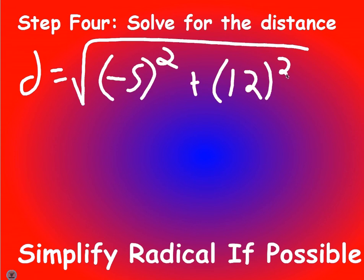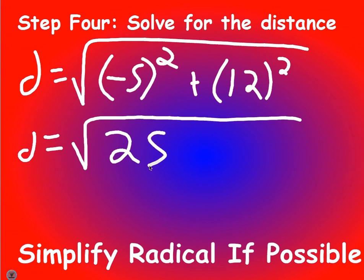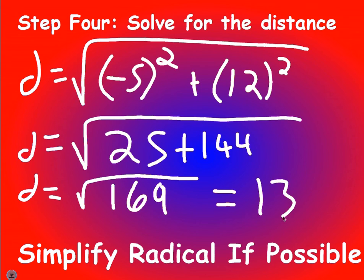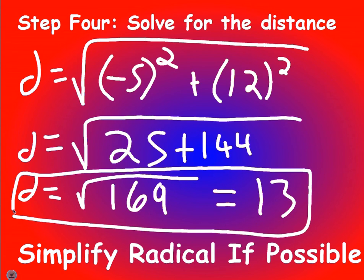Negative 5 squared is 25 — remember, negative times negative is positive. And 12 squared is 144. So we have the square root of 169. The square root of 169 is 13. In this case, the distance between the two points is a whole number. It'll happen a few times on the worksheet, but most of the time it will come out to a radical.